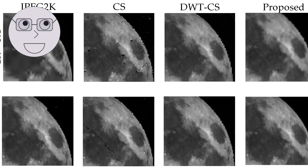Wavelets are used in image compression because they can efficiently represent signals with a small number of coefficients. This makes it possible to compress images without losing too much information.